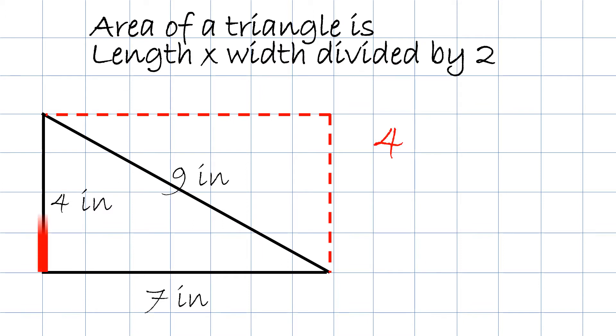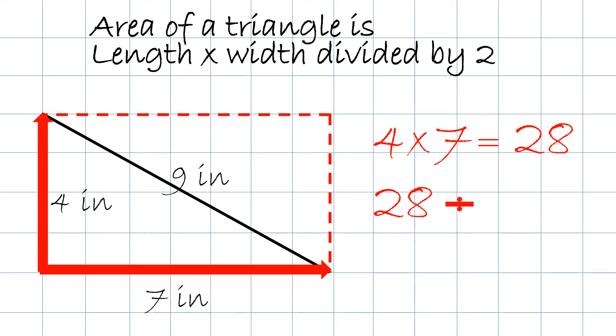So in this case, let's take 4, multiply by 7 and we will get 28, which will be the area of the rectangle. Then we take the 28 and divide it by 2. In this case, we'll do division. 28 divided by 2 will equal 14 inches squared. There, that is the area of the triangle.